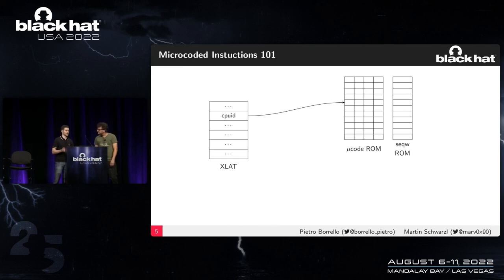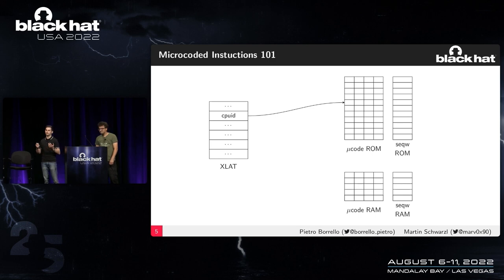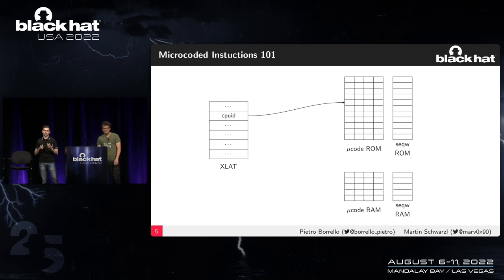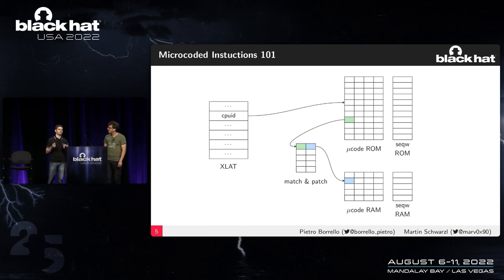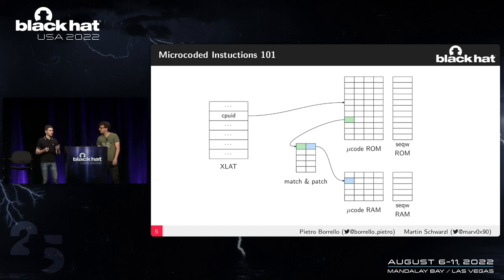If the microcode were only in ROM, you couldn't patch bugs like Spectre. So CPUs also support an internal RAM where you can edit and patch microcode. A component called match-and-patch redirects control flow: every time you execute an instruction that is programmed to jump to the RAM, match-and-patch redirects execution there.